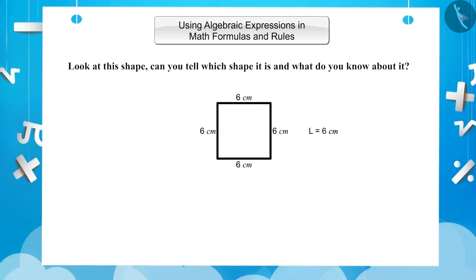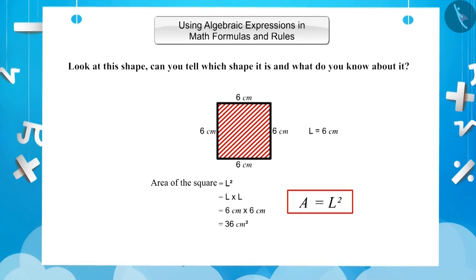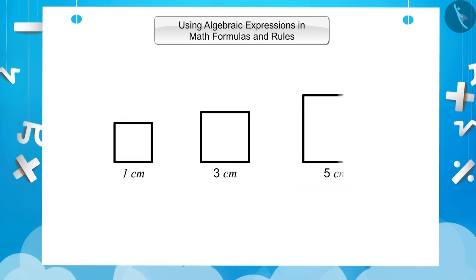Let us now find the area of this square. The area of a square is equal to the square of its side. So the area will be L squared, which equals L multiplied by L, which equals 6 cm multiplied by 6 cm, which equals 36 cm squared. So the area of this square is 36 cm squared. If we represent the area of the square with A, then A equals L squared. With this formula, you can find the area of any square. Now you can find the perimeter and area of any square using these formulas.